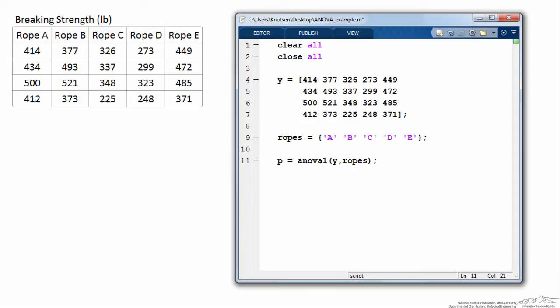The function that we'll want to use in MATLAB for a one-way analysis of variance is called ANOVA1. Provided I've got each of the treatments, or each of the five ropes arranged in columns in that matrix Y, and each of the four measurements in rows, I can call ANOVA1 with my matrix Y and then the groups of ropes A through E as the second input to that function.